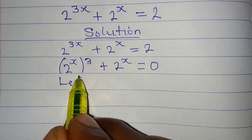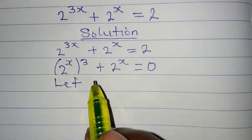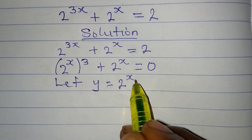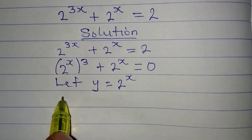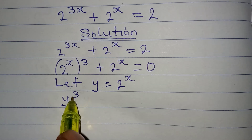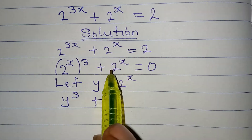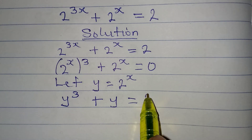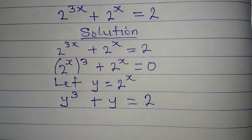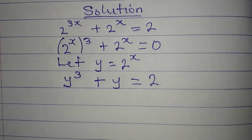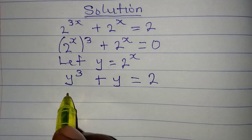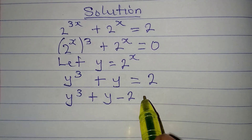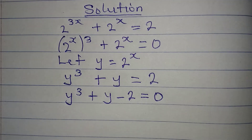We have 2 to the power of x appearing in two places, so let's pick a letter to represent it. Let y equal 2 to the power of x. In place of 2 to the power of x, we write y — so we get y cubed plus y equals 2. The next step is to bring everything to the left, giving us y³ + y − 2 = 0.